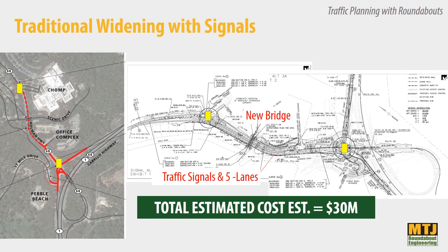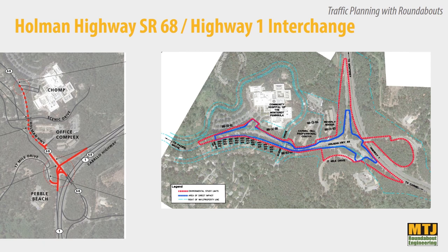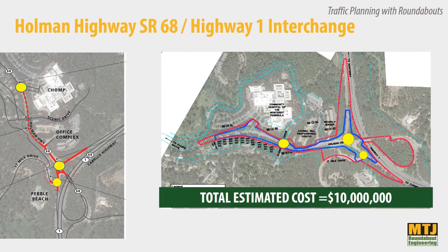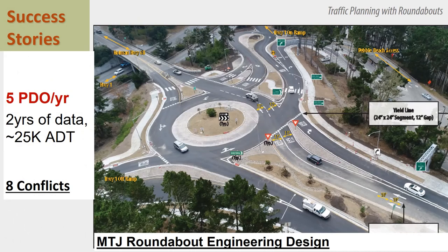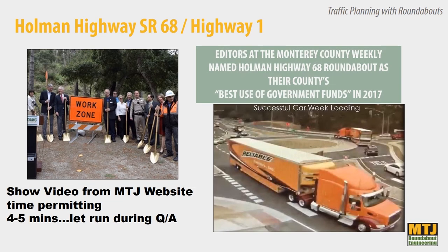It was going to cost $30 million and no one had the money for it. The local lead, Rich Deal, who was with the City of Monterey, thought roundabouts might be a good idea. So a roundabout here, here, and here — instead of $30 million, we don't have to widen the road, we can do it for $10 million. And that's what got put in. It's a single lane to a flared two-lane entry. The existing two-lane bridge was maintained, access to Pebble Beach was maintained. It's averaging less than five PDOs, it's only been open a couple years, there are eight conflict points, and it was voted the best use of government funds in 2017.